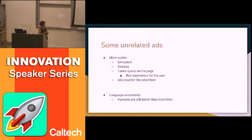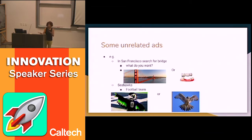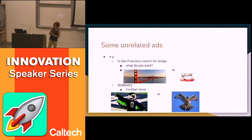There are still some language uncertainties that machines aren't good at determining yet. For example, if you're in San Francisco and you're searching for a bridge, you probably mean the Golden Gate Bridge or Bay Bridge — you don't need a dentist. For a machine, it's uncertain. Or if you search for Seahawks, do you mean the football team or the bird? These are the things that machines haven't caught up to us on yet.